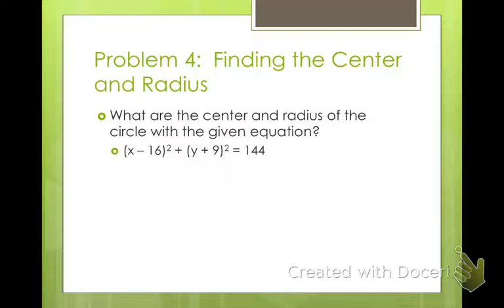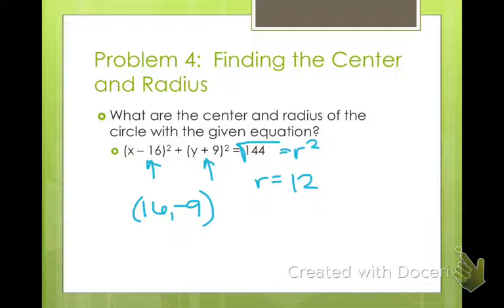Finding the center and the radius: here I'm giving you an equation. I want you to work backwards now. Tell me what the center and the radius are. To find my center, I look at my h and k values and change the signs. So now it's (16, -9). To find my radius, I need to take the square root of whatever this is, because this is r². Square root of 144 is 12. So it's centered at (16, -9) with a radius of 12.